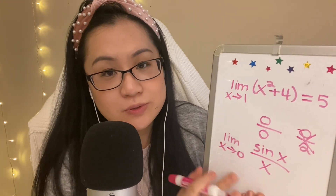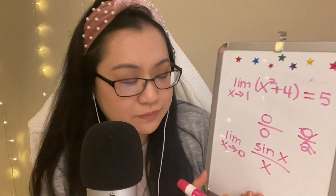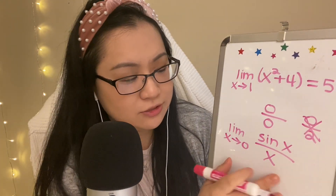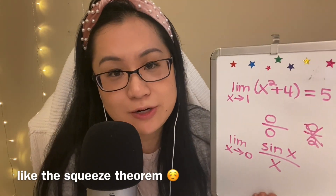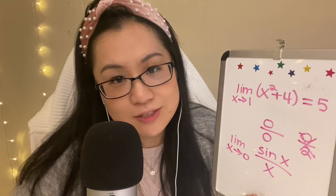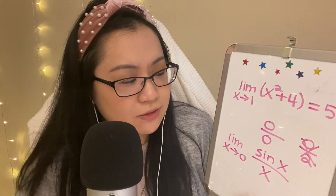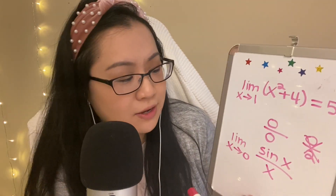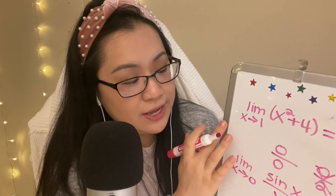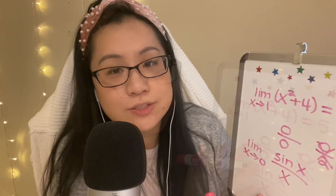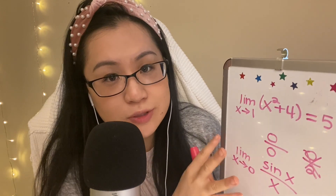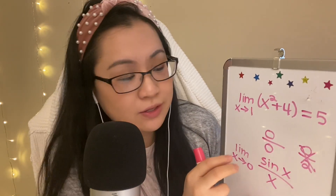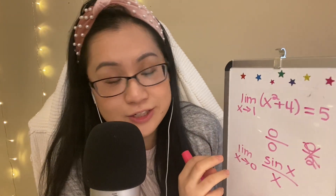Zero over zero is a wonky form — the fancy word for that is indeterminate form. We don't know what the limit is if we substitute that. The confusing part is that as something approaches zero on both the top and the bottom, we basically want to consider which one approaches zero faster, because they have different effects on the overall fraction. So that's an indeterminate form.